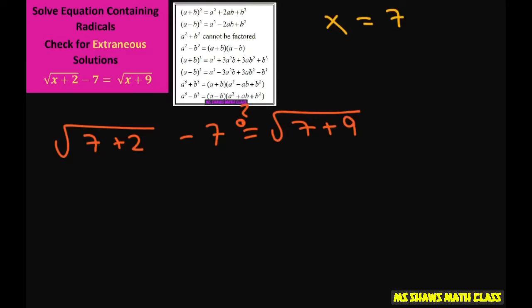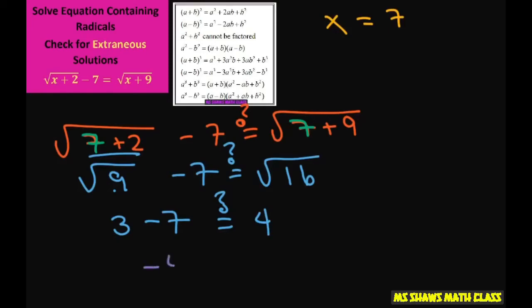So as you can see I just plugged in 7 everywhere there was an x. So this is 9 minus 7 and this is going to be 16. So the square root of 9 is 3 minus 7, does that equal 4? And what we get is negative 4 does not equal 4. So x equals 7 is extraneous.